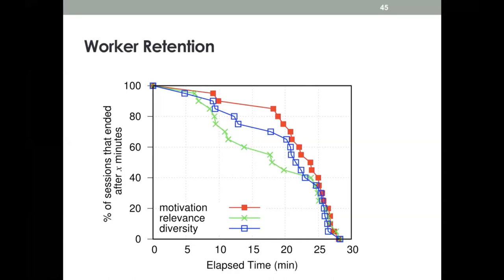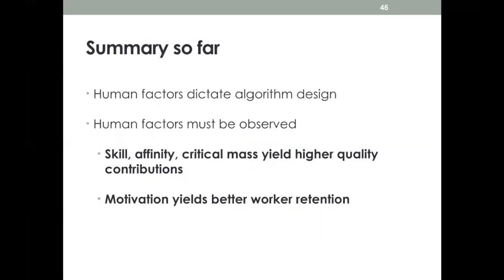Diversity comes second, and relevance last in terms of worker retention. Importantly, simply optimizing for how well tasks match workers' profiles — the green line — provides the highest quality outcome but has the lowest worker retention, meaning workers stay in the system the shortest time. This calls for considering worker-centric factors such as motivation. The summary so far: human factors must dictate algorithm design; they should be observed during task completion. Skill, affinity, and critical mass yielded higher quality contributions, and motivation itself yields better worker retention.